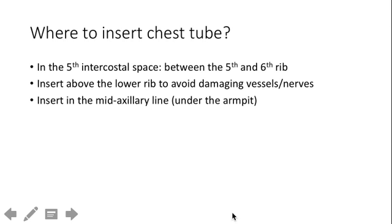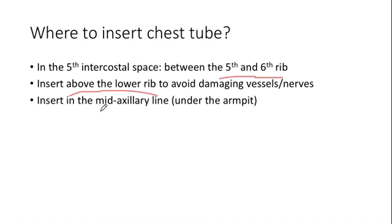Know how and where to insert a chest tube: it goes between the fifth and sixth rib in the fifth intercostal space (fourth intercostal space is also acceptable). The key is to go in above the lower rib, and insert it in the mid-axillary line — basically under the armpit. This is different from thoracentesis for an effusion, where you insert the needle in the mid-clavicular line from the back.